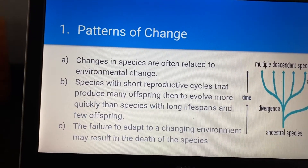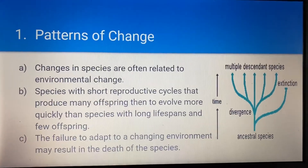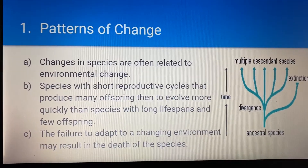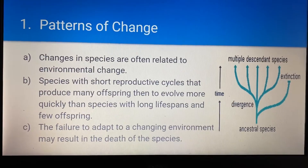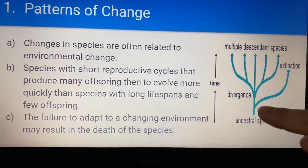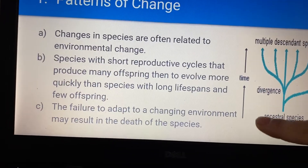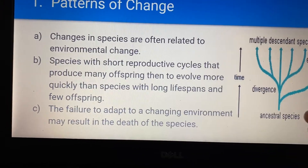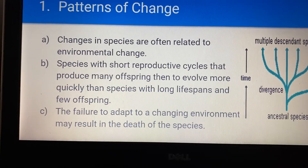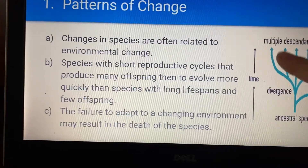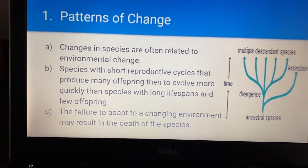Failure to adapt to a changing environment can result in the death of many species. And if you remember our Beaks of Finches lab, the birds that couldn't feed off the seeds either had to move from the island or they died. This is showing you how evolution is more like a branch than a tree. Here's the ancestral species — the first one. One species won't be able to make it and will go extinct, but all these other multitude of descended species will be adapted and able to survive.